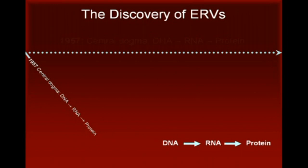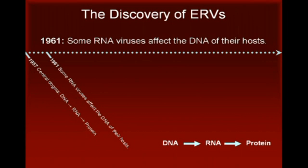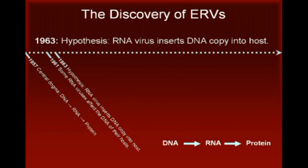In 1961, researchers reported that cells transformed by an RNA virus called RSV remain transformed, even after several subsequent rounds of cell division. This suggested that the viral RNA had somehow affected the DNA of the host cell — an observation that appeared to contradict the assumption that information only flows from DNA to RNA to protein. Two years later, in 1963, a possible solution to this puzzle was proposed: researchers suggested that the RNA virus made a DNA copy of itself and then integrated this DNA into the host genome. This hypothesis was debated for the next several years without a clear resolution.